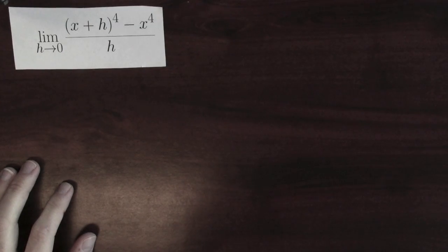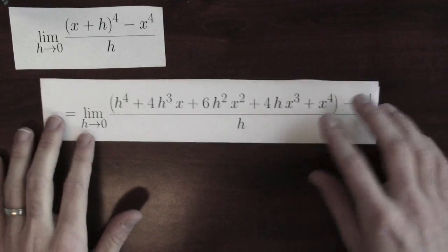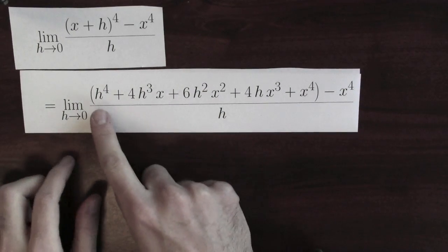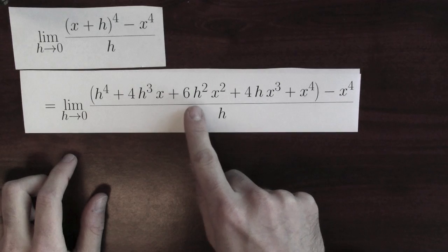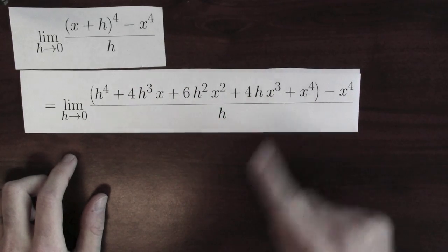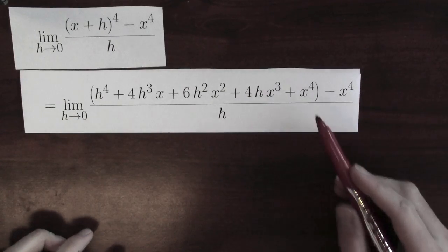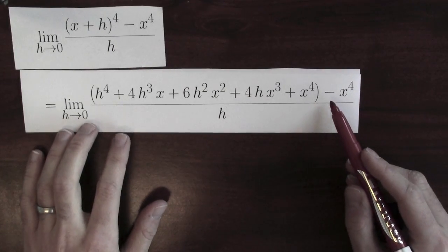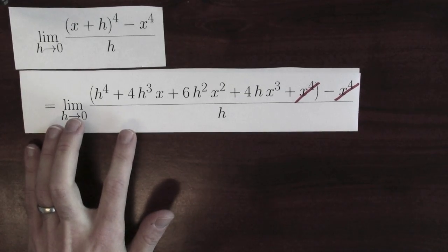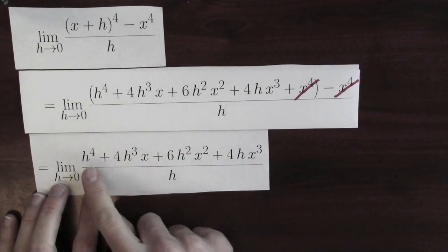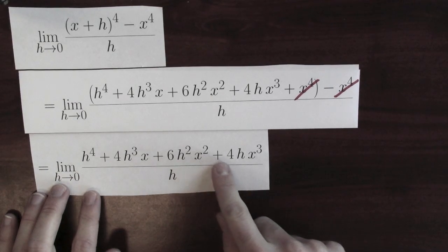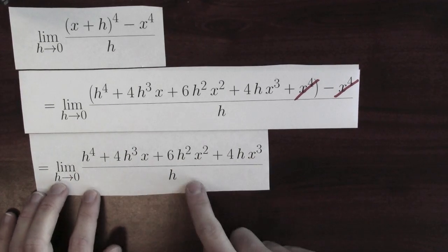The first step is to expand out x plus h to the 4th. And if I expand x plus h to the 4th, this is what I get: h to the 4th plus 4h cubed x plus 6h squared x squared plus 4h x cubed plus x to the 4th. And now, you'll notice something very exciting. I've got an x to the 4th minus an x to the 4th. So, I can cancel those two terms, and I'll be left with the limit of everything else: h to the 4th plus 4h cubed x plus 6h squared x squared plus 4h x cubed, still all over h.